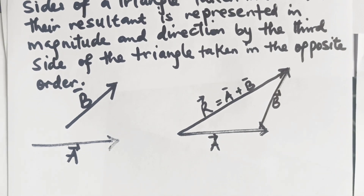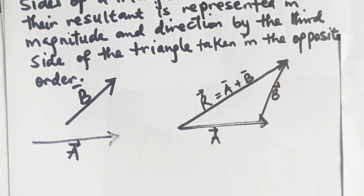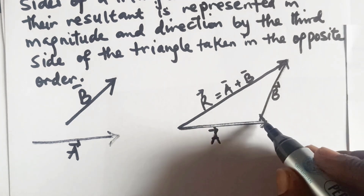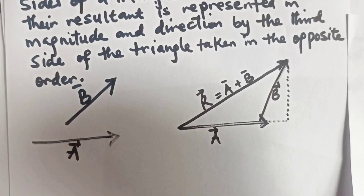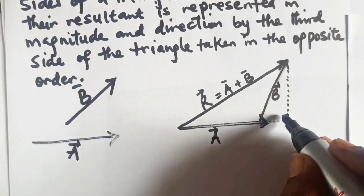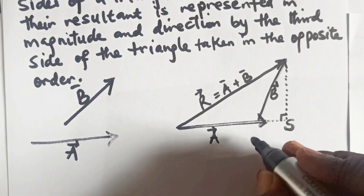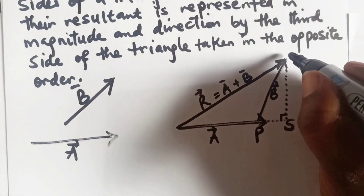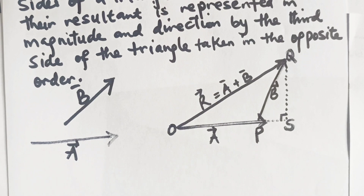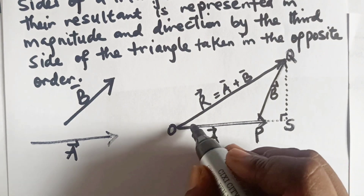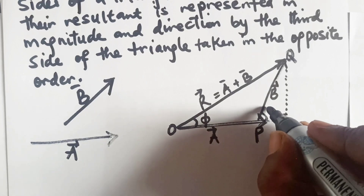Now we are going to derive a formula for the triangle law of vector addition. Let's extend this diagram. At this point we have a right angle — we can label this S. Here we label P, we label here Q, and we label this point O. Then the angle between A and R we label phi, while we label the angle between A and R as theta.